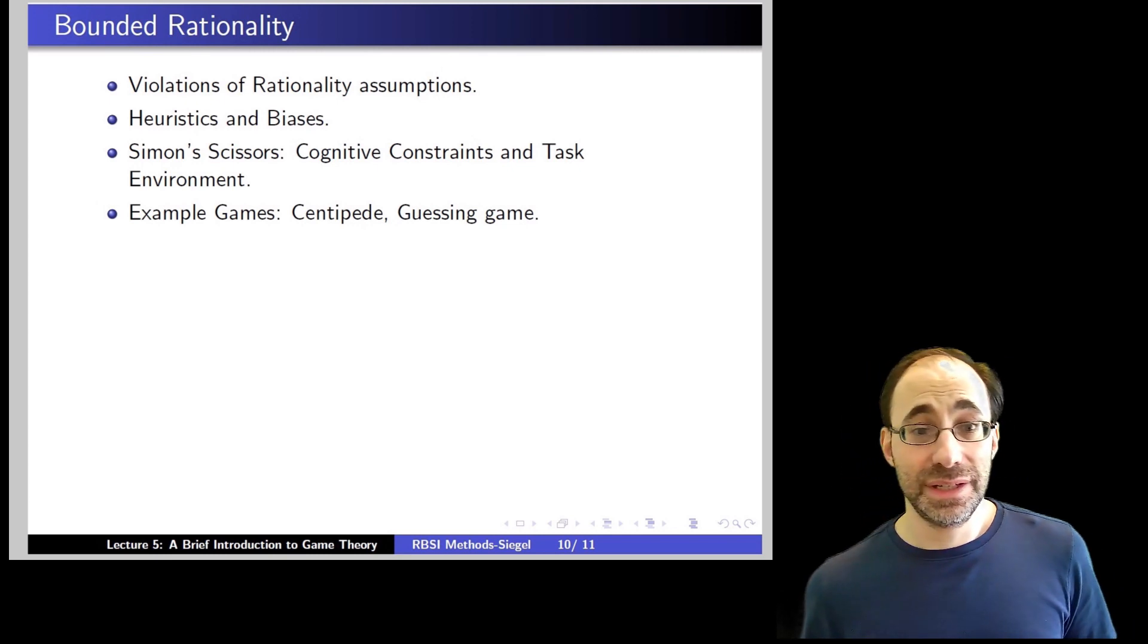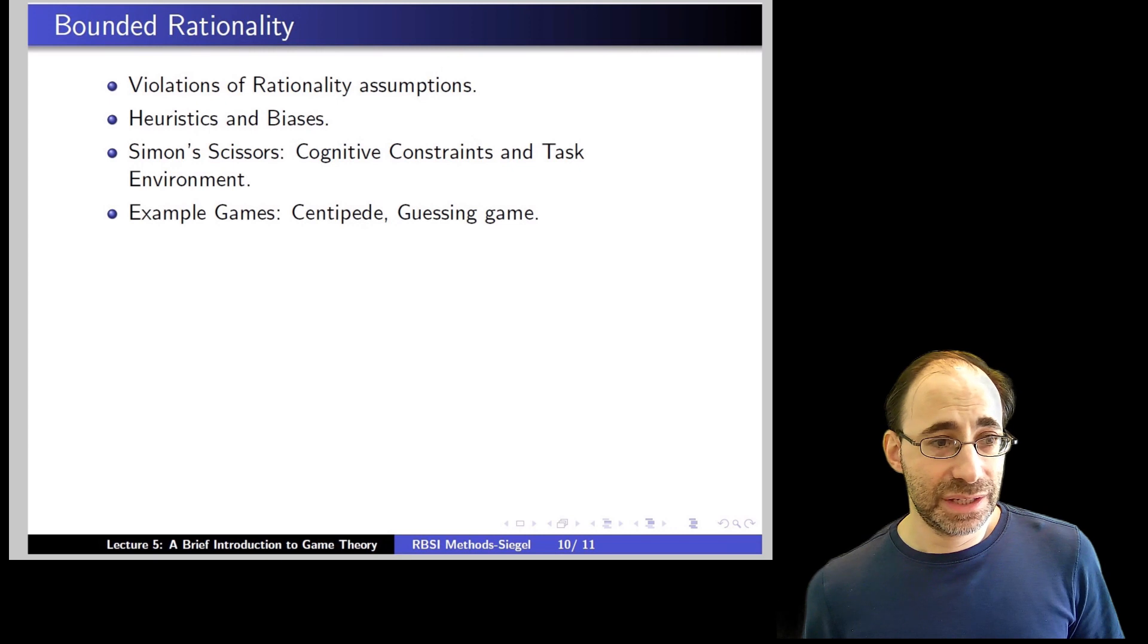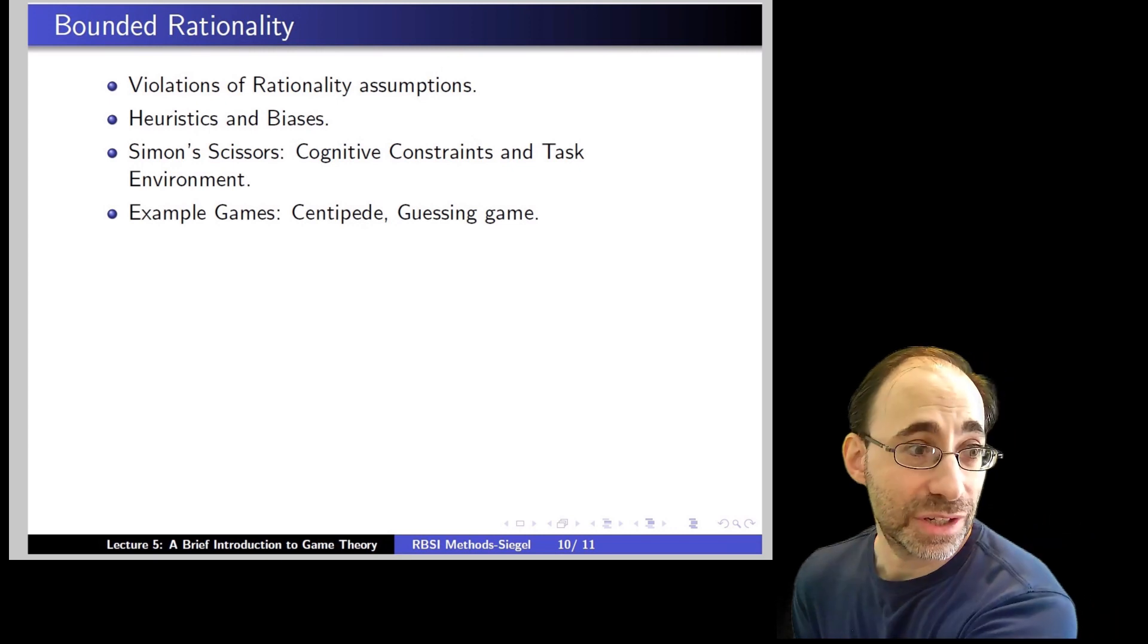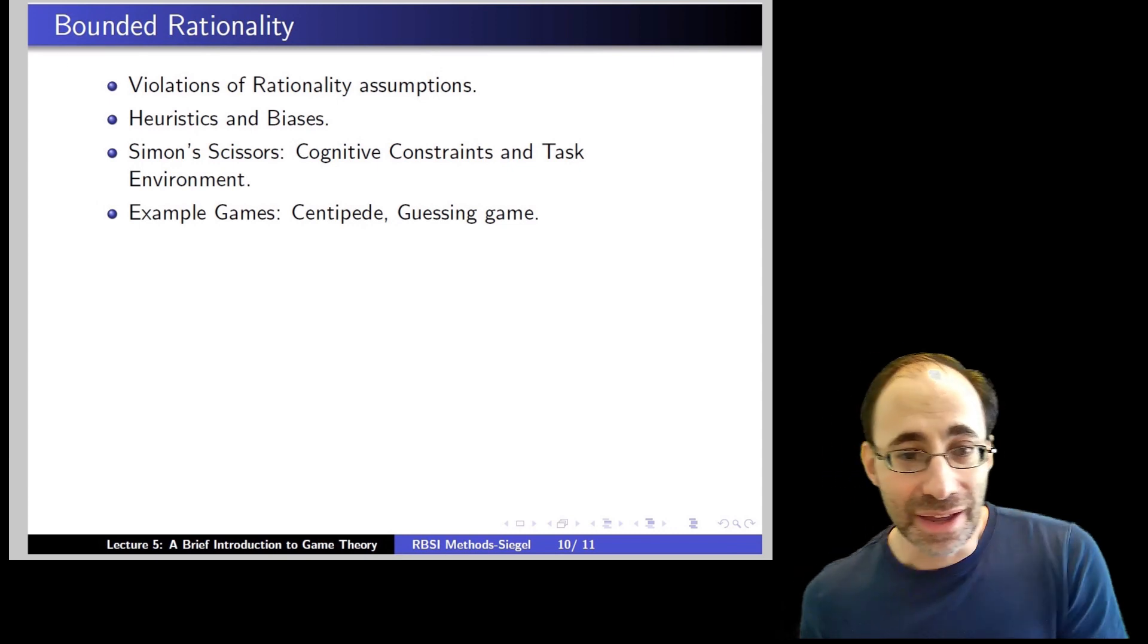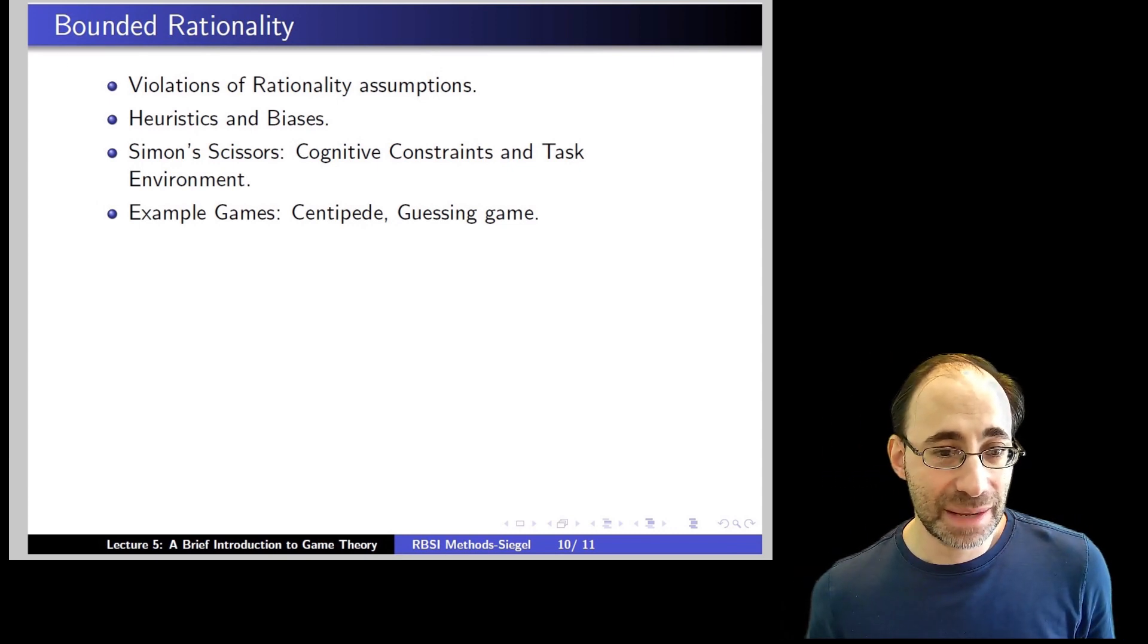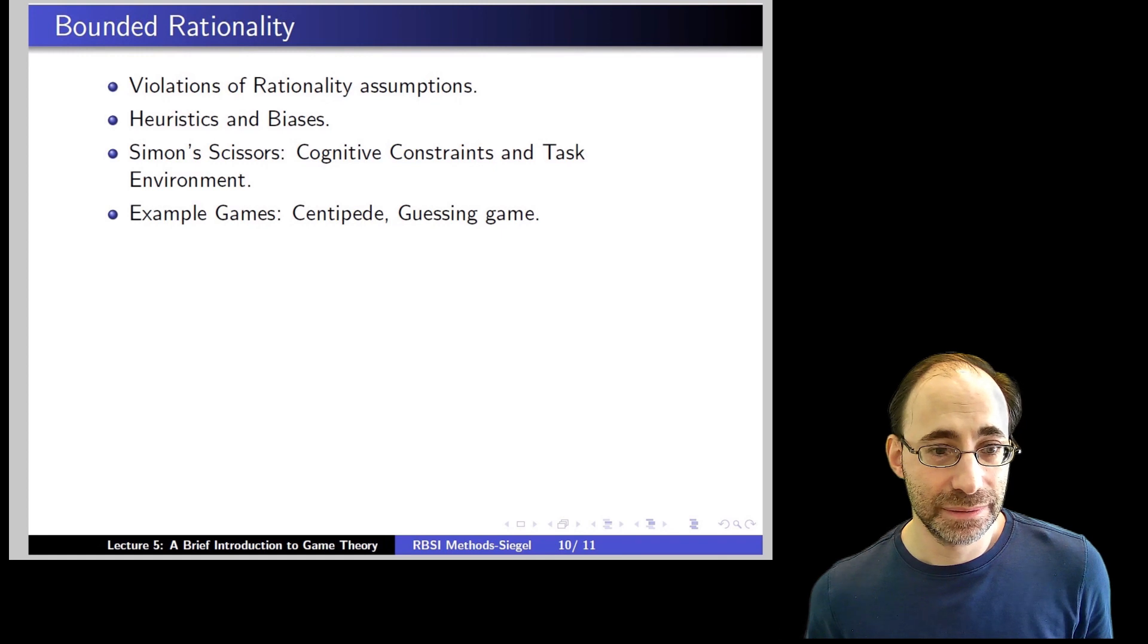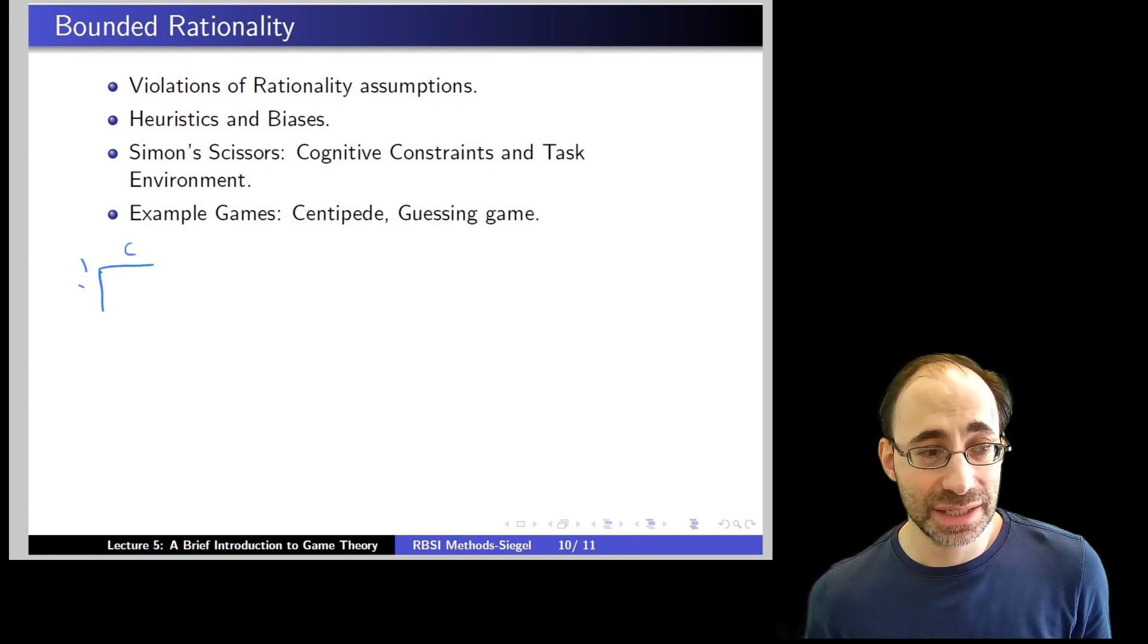The first is Centipede. Centipede is a game that looks like this. And I should make sure I have the payoffs in front of me because there's a lot of them and I don't remember them off the top of my head. So Centipede is a game that looks like this. Player one has a choice between continuing and stopping. If player one stops, player one gets 0.4, so 40 cents, and player two gets 10 cents.